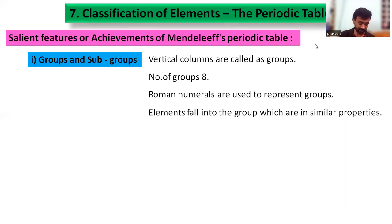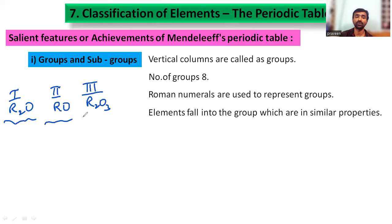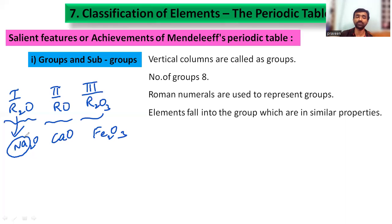For example, in the periodic table on page 128, each group is given a general formula: group 1 is R₂O, group 2 is RO, group 3 is R₂O₃, and so on. Elements like Na₂O fall into group 1, CaO into group 2, and Fe₂O₃ into group 3.